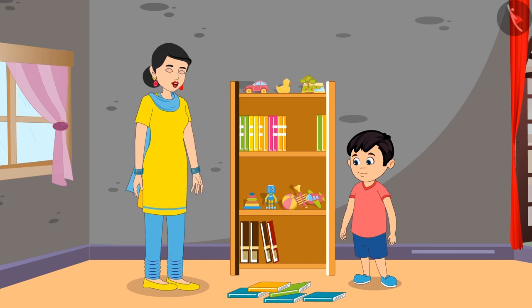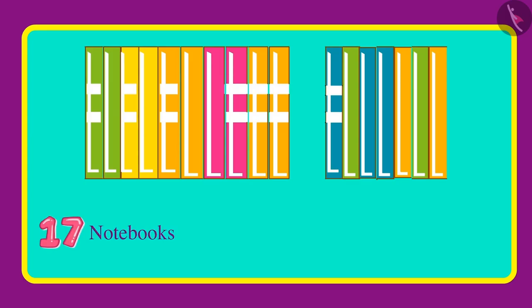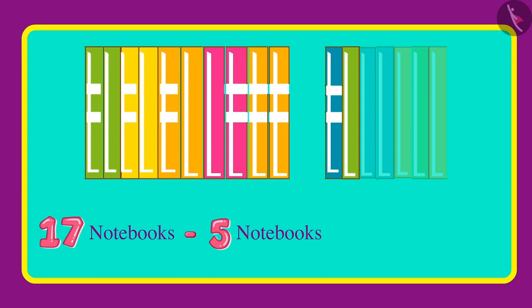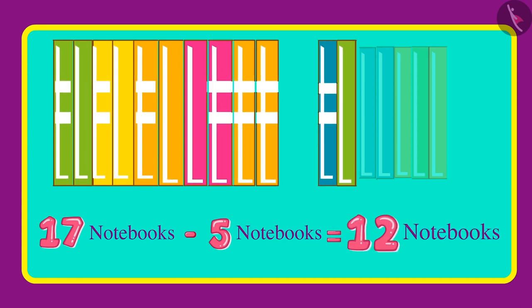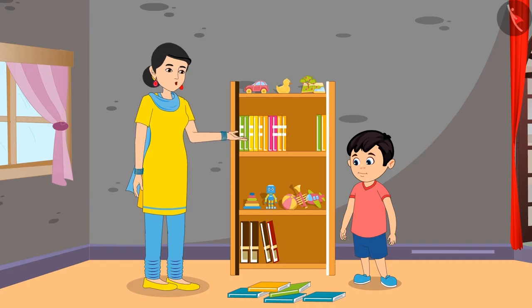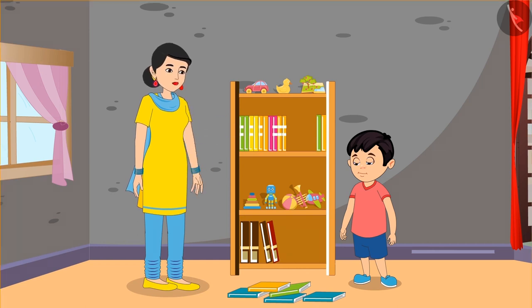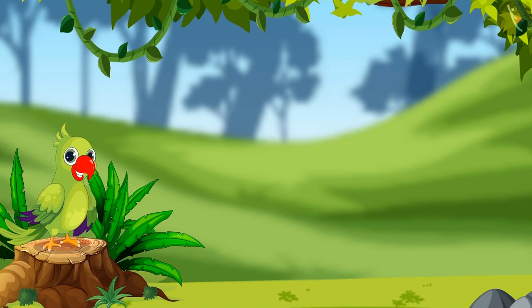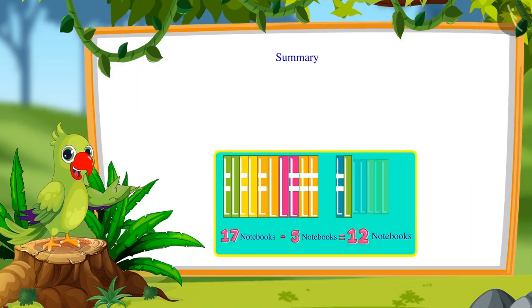Mother says, 'Now subtract the five used notebooks out of 17 notebooks — tell me how many new notebooks you have.' Chotu calculates: 'Out of 17 notebooks, if we subtract five notebooks, we are left with 12 notebooks.' Mother responds, 'Well done, Chotu! Now keep the remaining notebooks separately.'